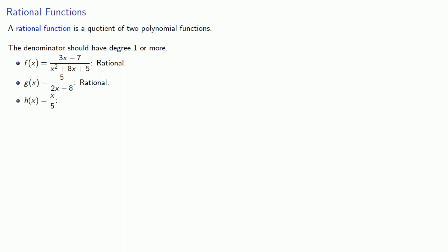h(x) = x/5. Since we want our denominator to have degree 1 or more, this is not considered a rational function.